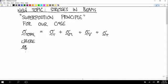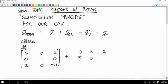So for example, if you have stress tensor [5 0 2; 0 1 0; 2 0 -3] and you add that to [0 5 2; 5 0 -4; 2 -4 1].